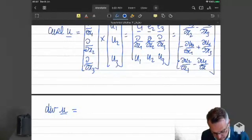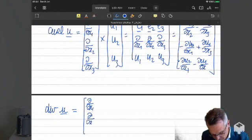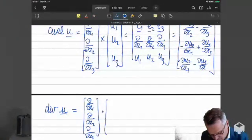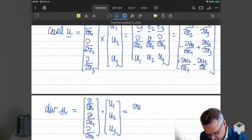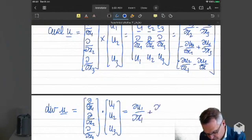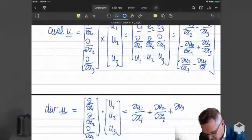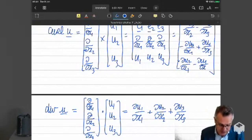So one way to think of it, if you don't remember, is to think of it as a dot product. But really, that's what it is. Du1 dx1 is just the sum of these three terms. It's also the trace of the gradient of u, and that's a scalar.